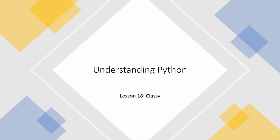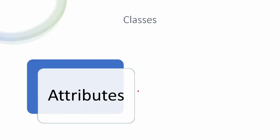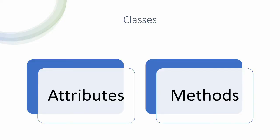Welcome back. Today we're going to continue looking at classes in Python and we're going to create our own class. Classes have attributes and methods, and when you create a class you can set those attributes or change them. You can give it methods or take them away, or you can just run the methods. Attributes are variables that are associated with that class, whereas methods are functions that that class can run.